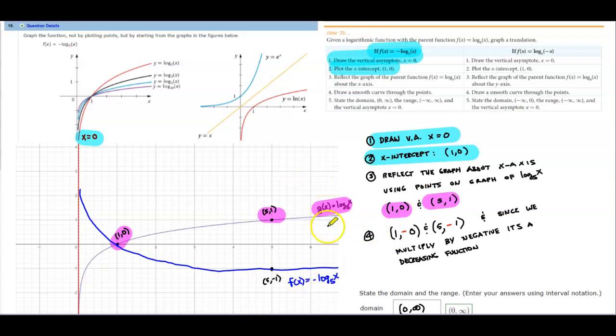And then what we're going to do is, since we're multiplying the entire function by a negative, that means that we're going to be multiplying the y-values by a negative. So we're going to get (1, 0). Negative times zero is just zero. So we get (1, 0).